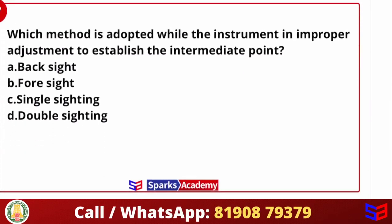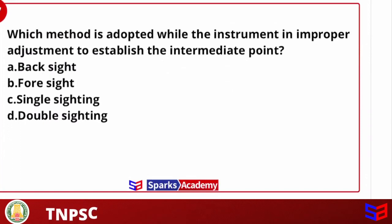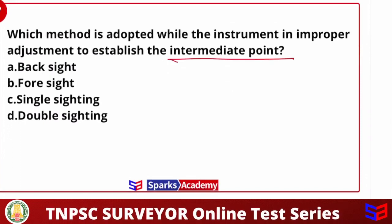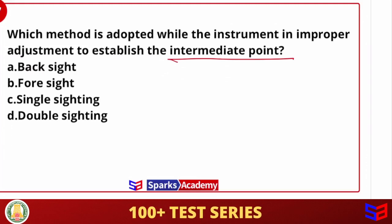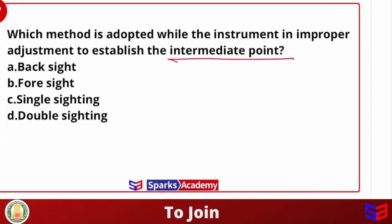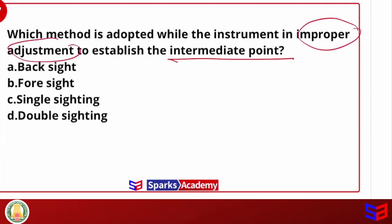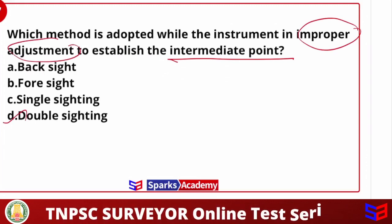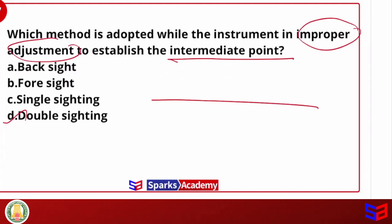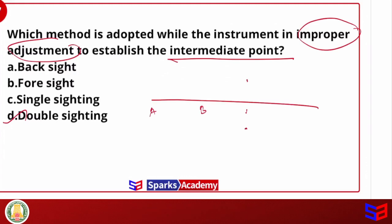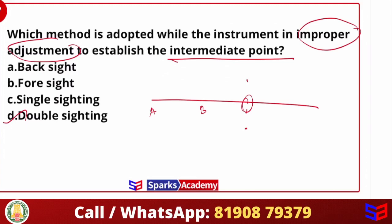Which method is adapted when the instrument is in improper adjustments to establish an intermediate point? The options are backside, foreside, single sighting, and double sighting. If there are improper adjustments, I would always prefer double sighting. This method is very accurate since it uses two points to establish a midpoint, making double sighting more accurate compared to all other methods.